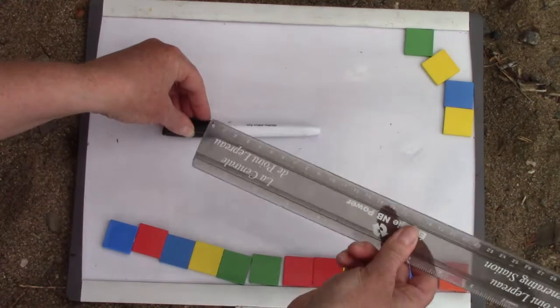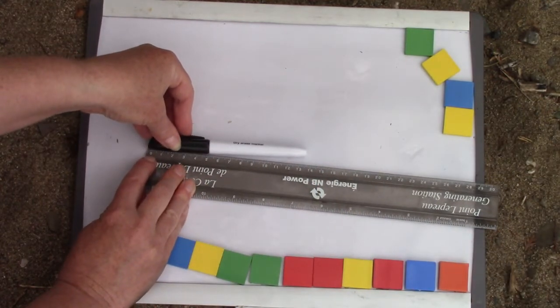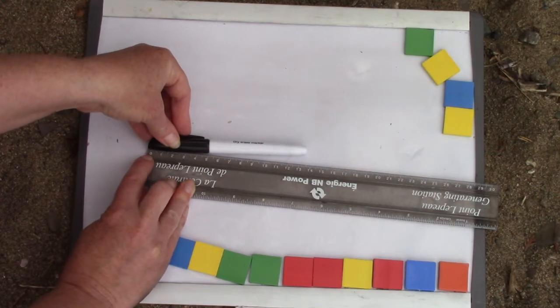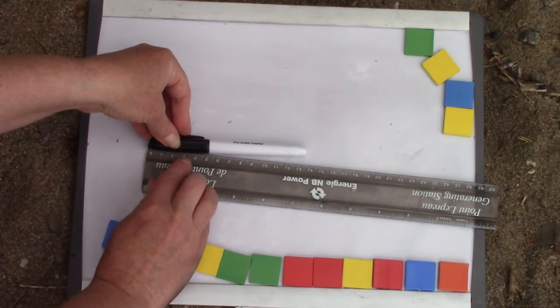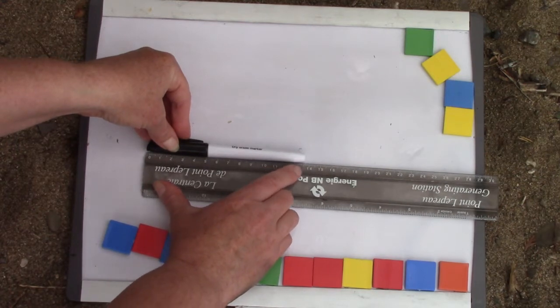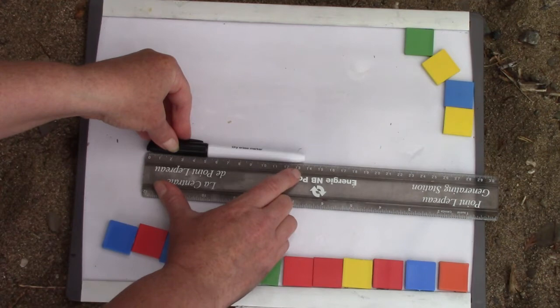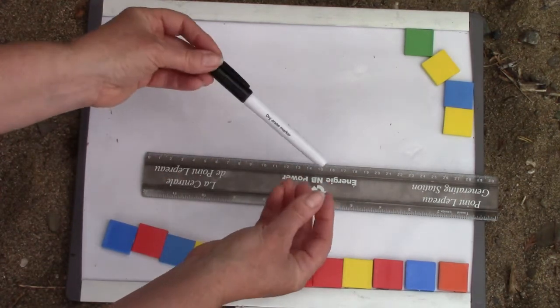Let's for fun see how many centimeters it is. Centimeters is on the other side and they're a little bit smaller. We start here at the zero. One, two, three, four, five, six, seven, eight, nine, ten, eleven, twelve, thirteen. Oh, not quite fourteen, but it's about thirteen centimeters long.